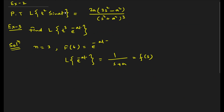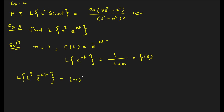In the same way, for the first example where we have sin(at) in place of cos(at), you follow the same procedure and you will get the corresponding answer. Now for Example 3, we raise the power to 3, so n = 3, and f(t) = e^(-at). We know that L{e^(-at)} = 1/(s + a), so this is our F(s). To find L{t³ e^(-at)}, it equals (-1)^3 · d³/ds³ [1/(s + a)].